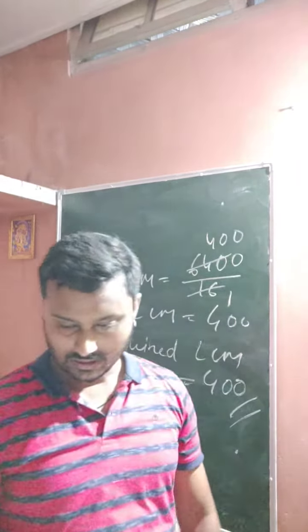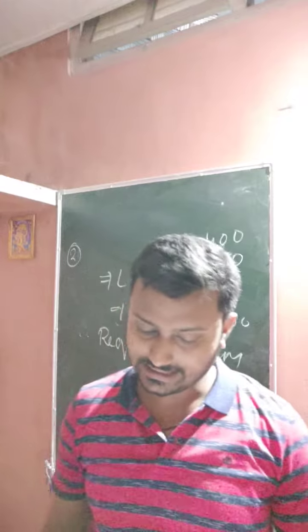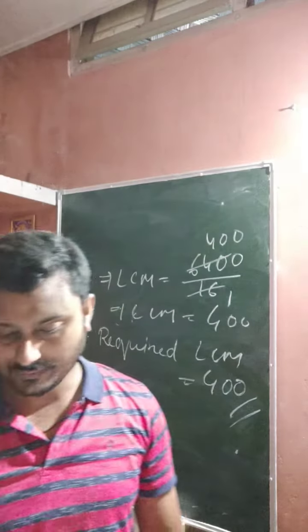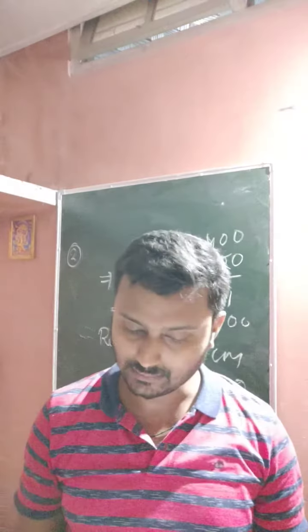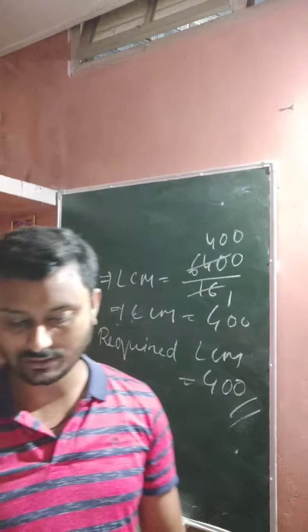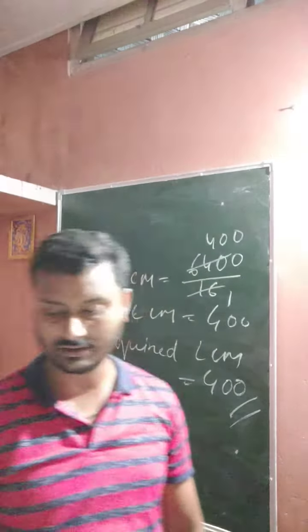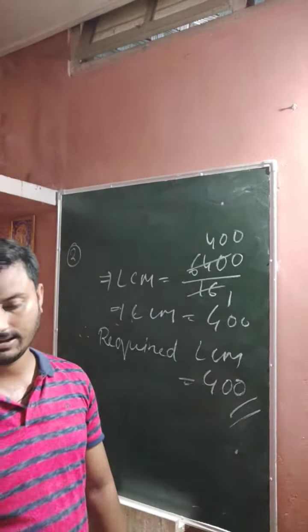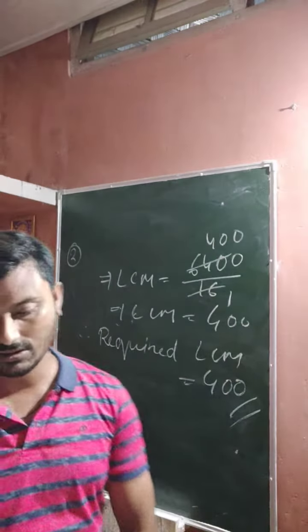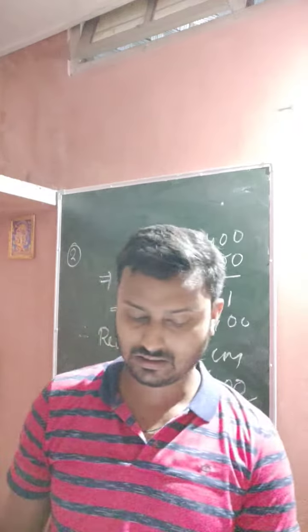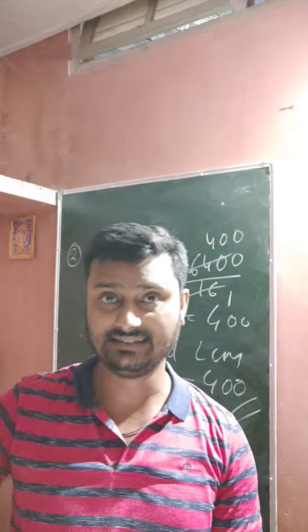Now come to the next question. Find the HCF and LCM of 14 and 21, and verify the property that the product of the numbers equals the product of HCF and LCM. This question will be solved in the next video.